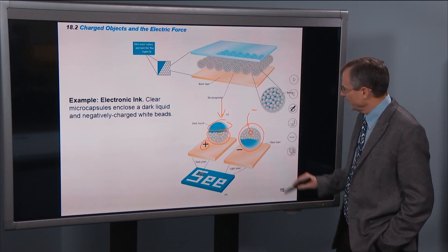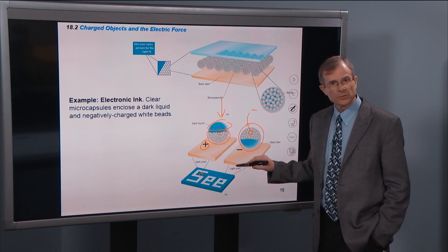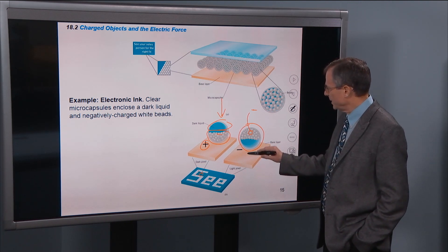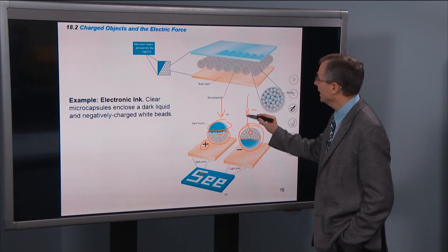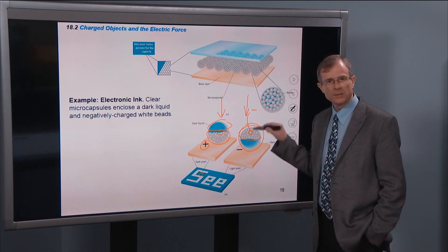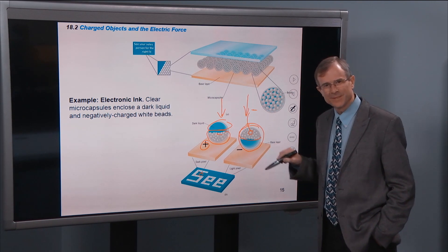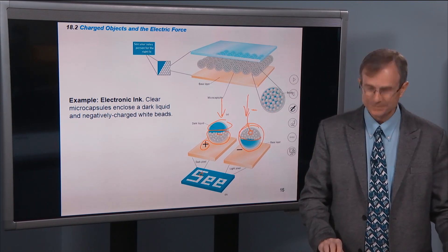And then if you charge the pixel negative, then the beads are repelled from that negative surface, and they go up to the top. And as you look at it from above, you'll see the white, white beads, and that's how electronic ink works, pretty cool.